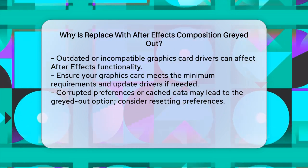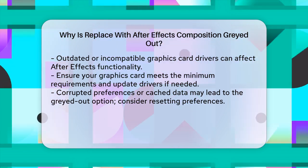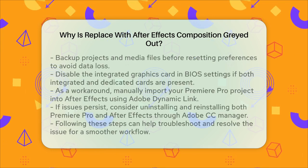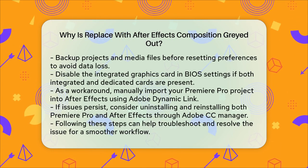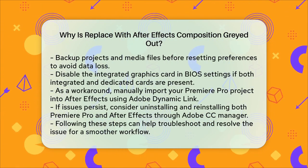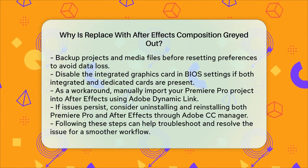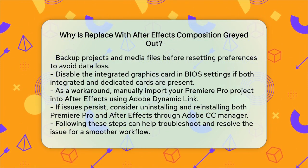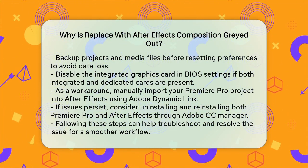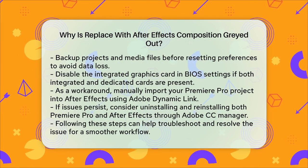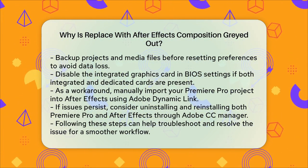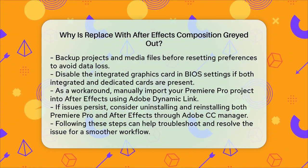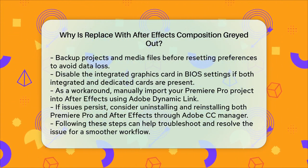In some cases, manually importing your Premiere Pro project into After Effects can be a workaround. Instead of using the Replace with After Effects Composition option, go to After Effects, use the Adobe Dynamic Link to import your Premiere Pro sequence, and then link the compositions. This allows you to achieve the same result without using the grayed out option.